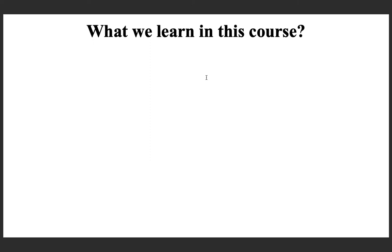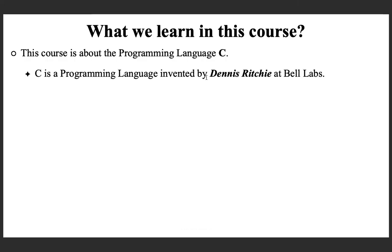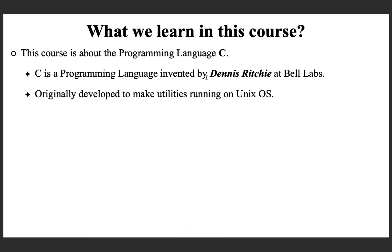Now we can see what we are going to learn in this course. This course is about the programming language C, which was invented by Dennis Ritchie at Bell Labs. Basically, that language was developed to make utilities running on the Unix operating system. It is a widely used programming language, and its properties will be discussed in a later lecture.